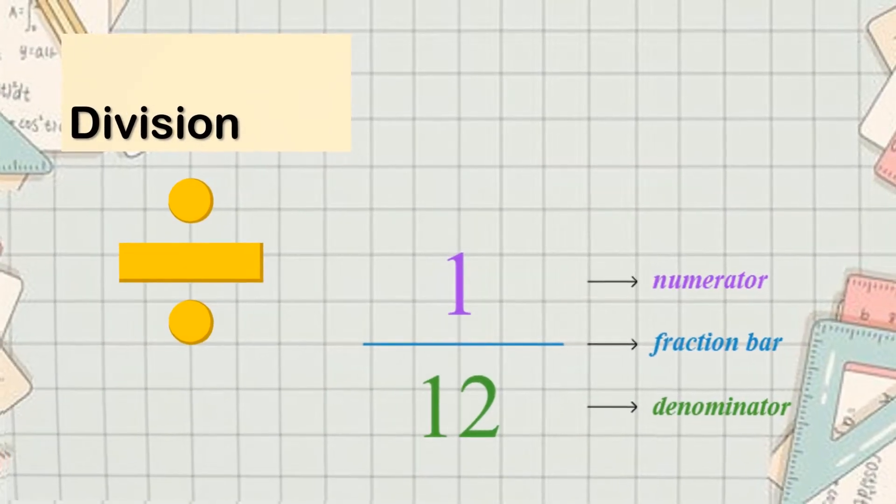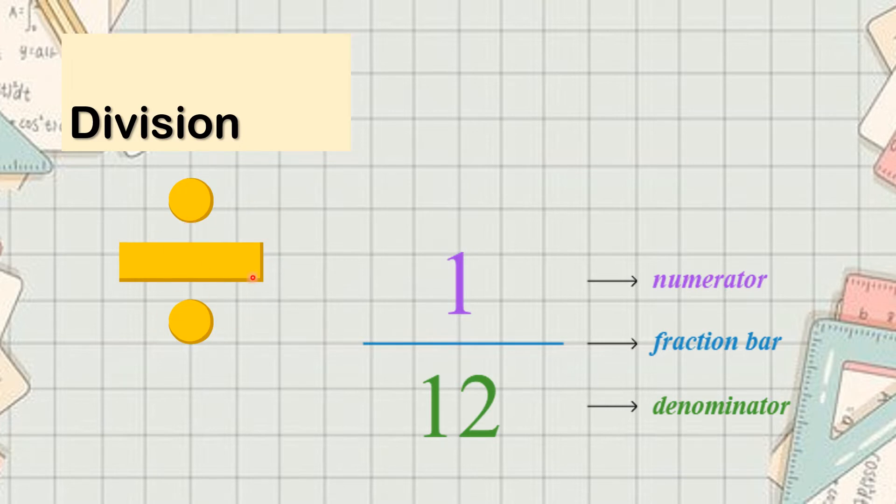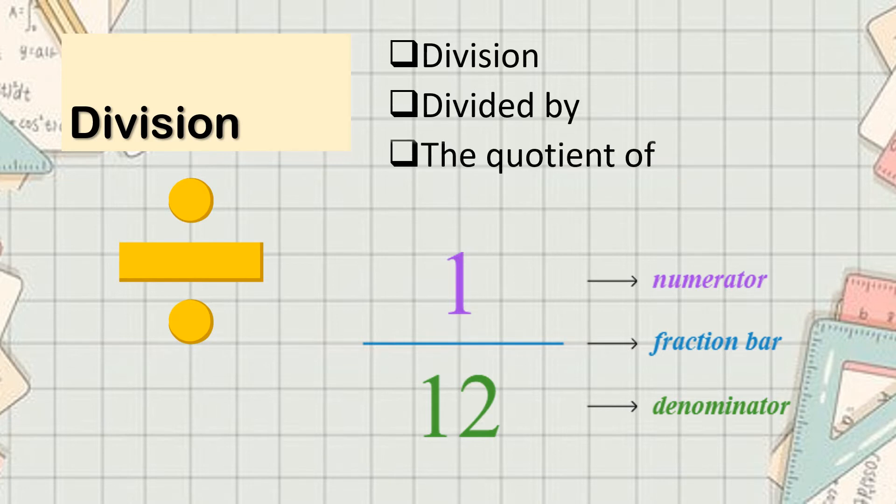Division. We can use this division symbol or the fraction bar. When you see the fraction bar, you know that signifies division as well. For example, 1 over 12, this is 1 divided by 12. Numerator, the fraction bar signifies division, and the denominator is the bottom one. The numerator is the dividend, 12 is the divisor. What words do we use to signify division? Division, divided by, the quotient of, the ratio of.